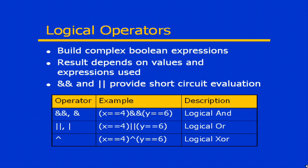Therefore, there really is no sense in evaluating the other side of the expression. So the double ampersand provides a short circuit evaluation. If x is equal to 4 returns the value of false, then y is equal to 6 will never be evaluated.